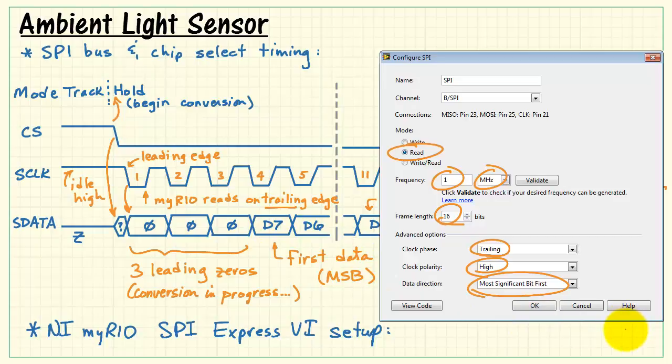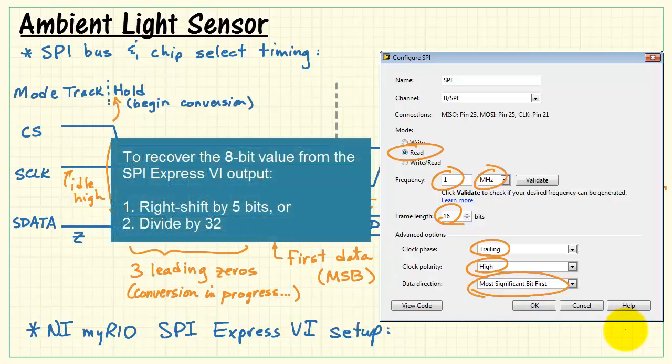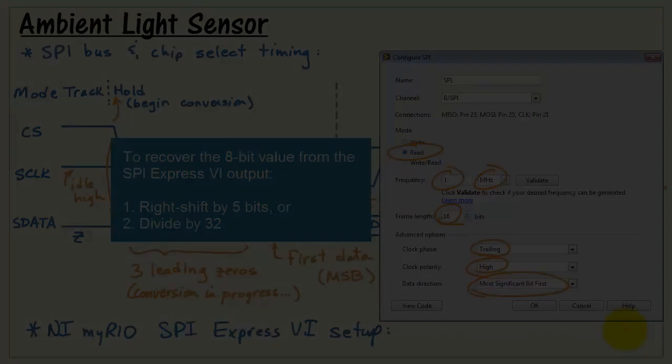Lastly, to recover the 8-bit value from the SPI Express VI output, you can either right-shift by 5 bits or equivalently divide by 32.